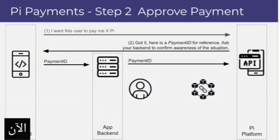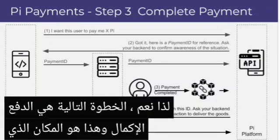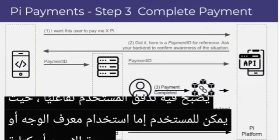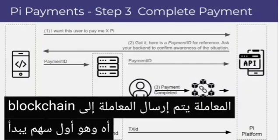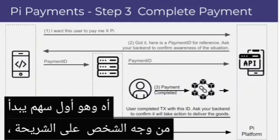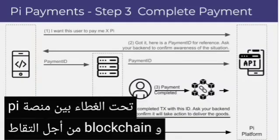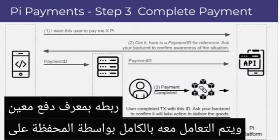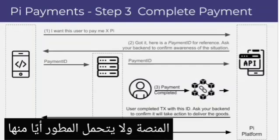The next step is payment completion, and this is where the user flow becomes interactive. This is where the user gets to either use Face ID, fingerprint, or manually type their passphrase to sign the transaction. The transaction gets sent to the blockchain — that's the first arrow starting from the person's face icon on the slide — and there is interaction hidden under the hood between the Pi platform and the blockchain to pick up this transaction and know that it is linked with a given payment ID.